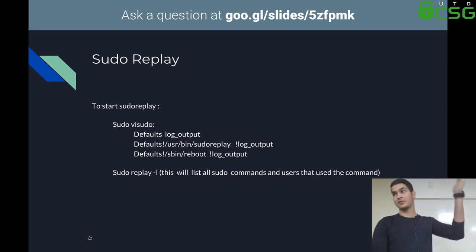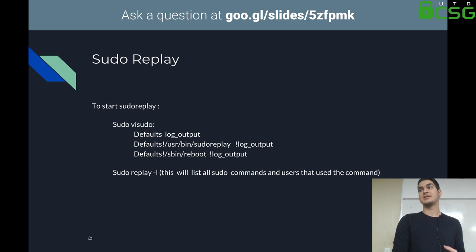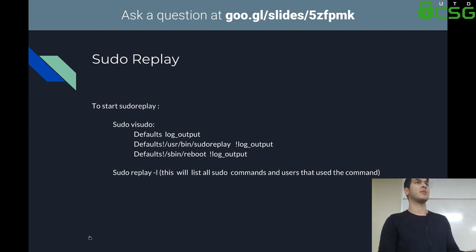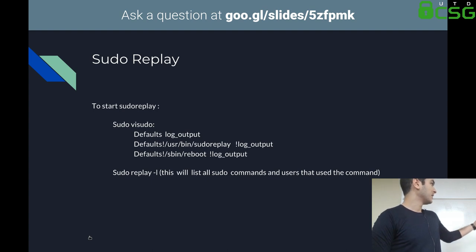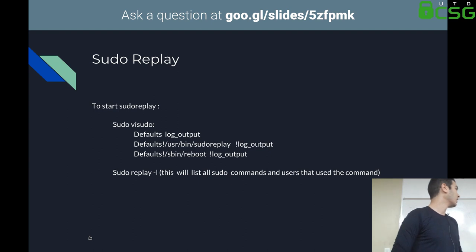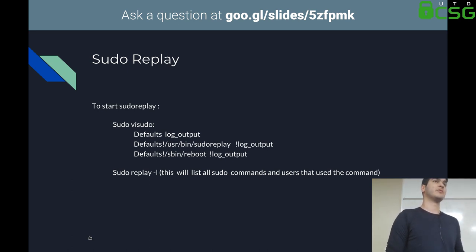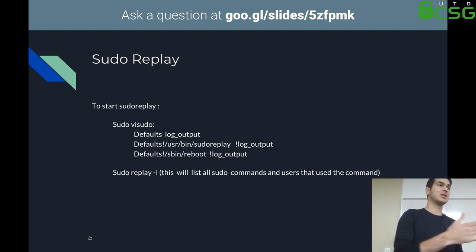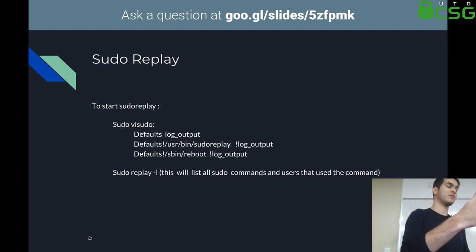Sudo replay allows you to check what someone has done in sudo. To enable it, run visudo to edit your sudo config and add the logging directives — they may already be commented out. Set the default log output location, then use 'sudo replay -l' to list sudo commands filtered by user or file. You can also replay commands in real time, seeing the time intervals between actions, and speed up the replay.